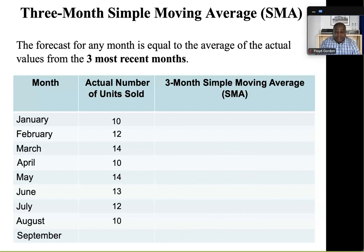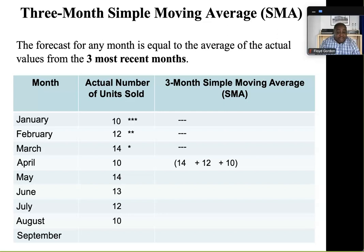Let's try another one — a three-month simple moving average. For this one, we want the average of the previous three months. Of course, we have to skip January, February, and March since we would not have three previous months of data to create a forecast. We start with April: 14 from March plus 12 from February plus 10 from January, divided by 3, gives a forecast of 12 for April.